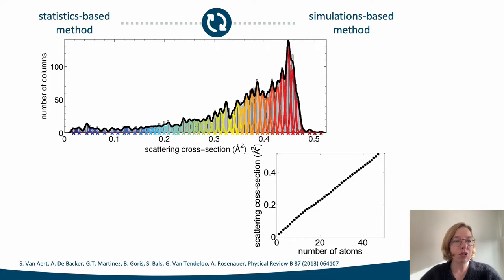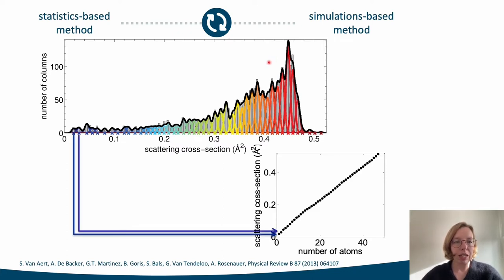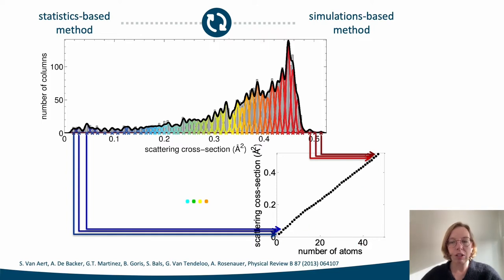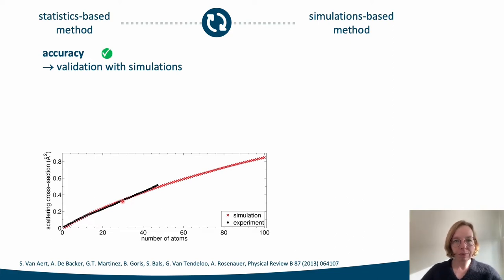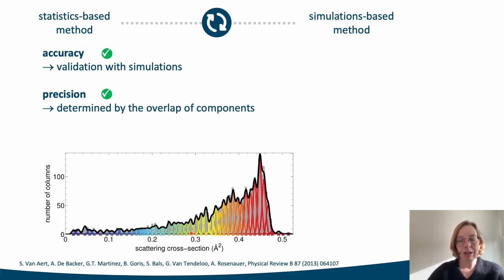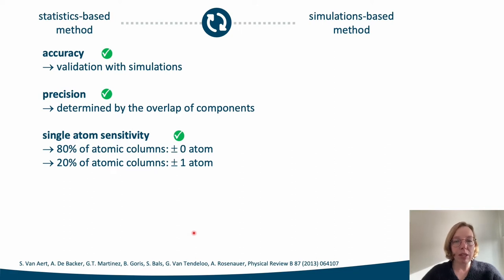It becomes interesting to compare the consistency of the statistics- and simulation-based results. We can plot the location of the components corresponding to the mean scattering cross-sections as a function of the number of atoms. The result of the previous slide is shown by the black dots, and this can be compared with the scattering cross-sections from image simulations shown in red. The excellent match validates the accuracy of the results. The precision is set by the overlap between neighbouring Gaussian components in the mixture model. Here we conclude that there is a probability of 20% to miscount the number of atoms by one atom, and a probability of 80% to correctly assign the number of atoms.